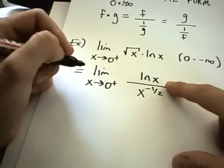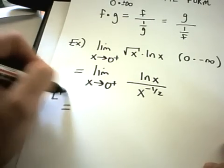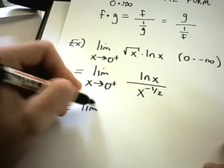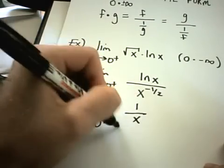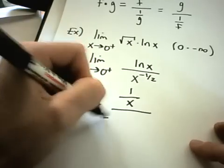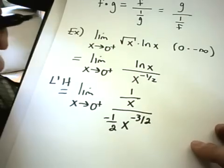And you can convince yourself this is now going to be of the form infinity over infinity. So I'll use L'Hopital's rule. The derivative of ln of x is 1 over x. In the denominator, I'll get negative 1 half x to the negative 3 halves.